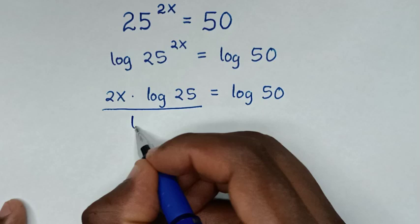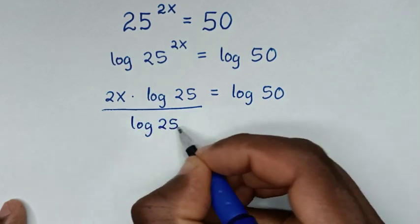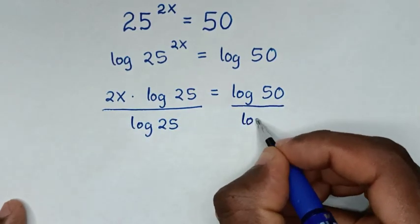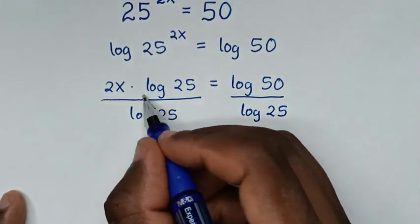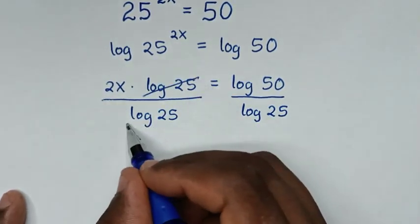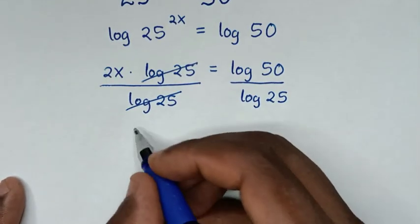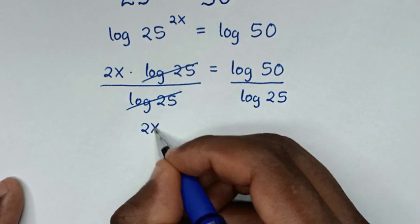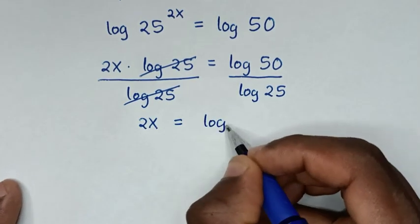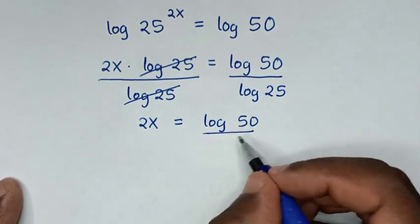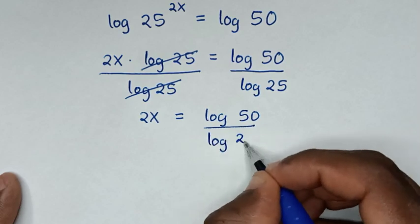Then we'll divide by log of 25 on both sides. So this log of 25 will cancel with this log of 25, and it will be 2x is equal to log of 50 over log of 25.